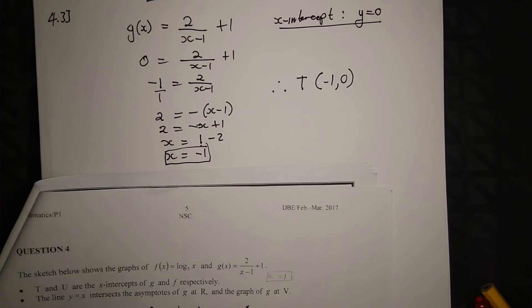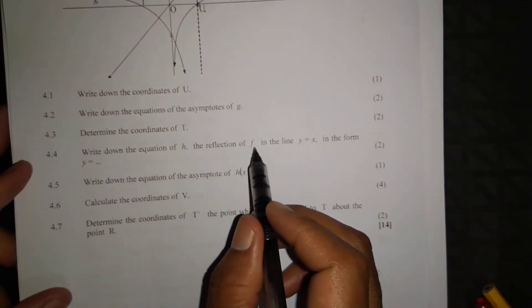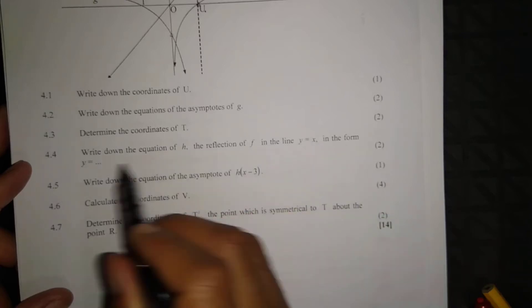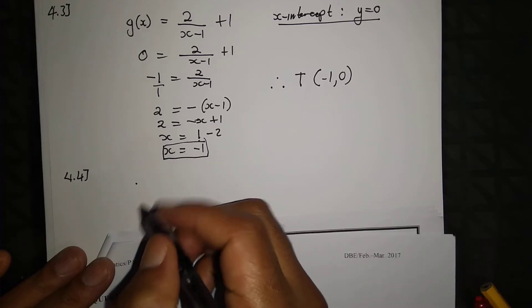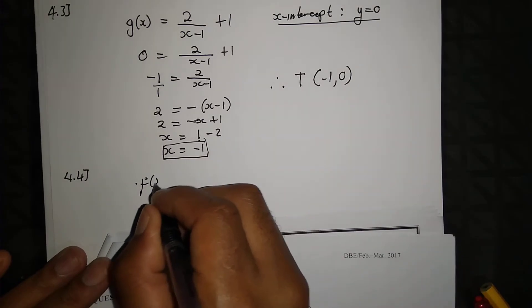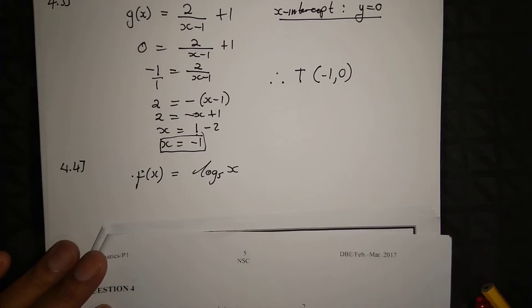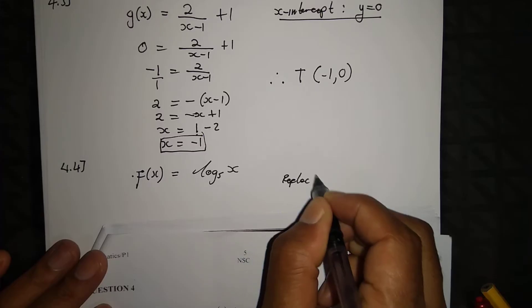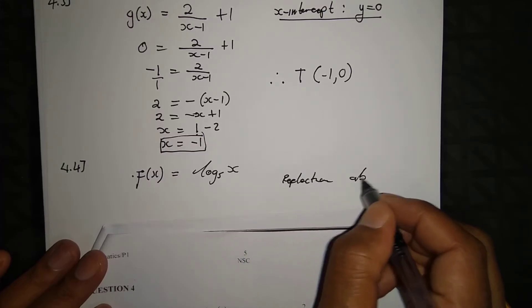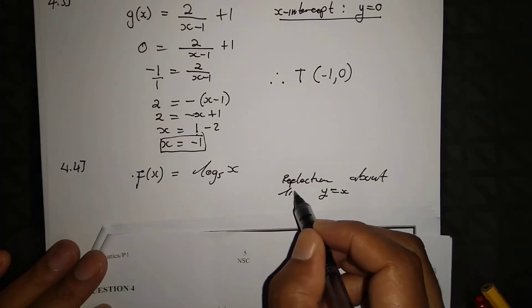Question 4.4: write down the equation of h, the reflection of f in the line y equal to x. For the inverse function, f of x is equal to log base 5. The reflection about the line y equal to x means we swap x and y.